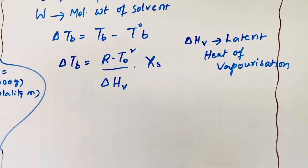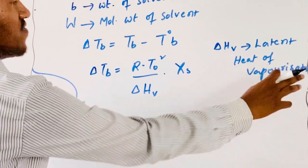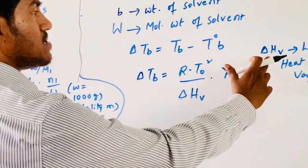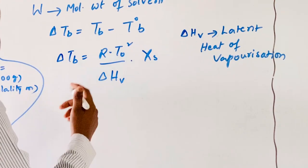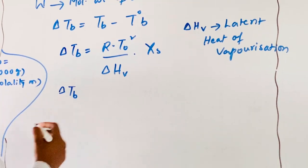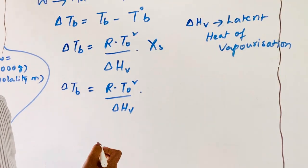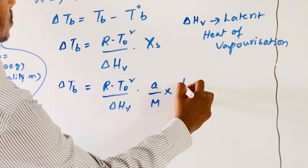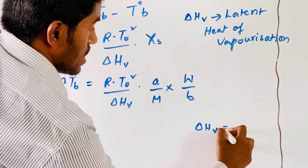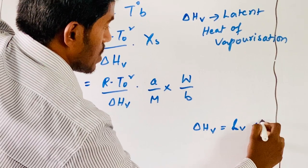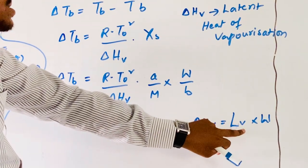Latent heat of vaporization is the amount of energy required to convert 1 kg of liquid totally into vapour form. From this, delta Tb equals R T0 squared by delta Hv into chi-s, which expands to (A by M) into (W by B). And delta Hv equals Lv into W, where Lv represents latent heat of vaporization.